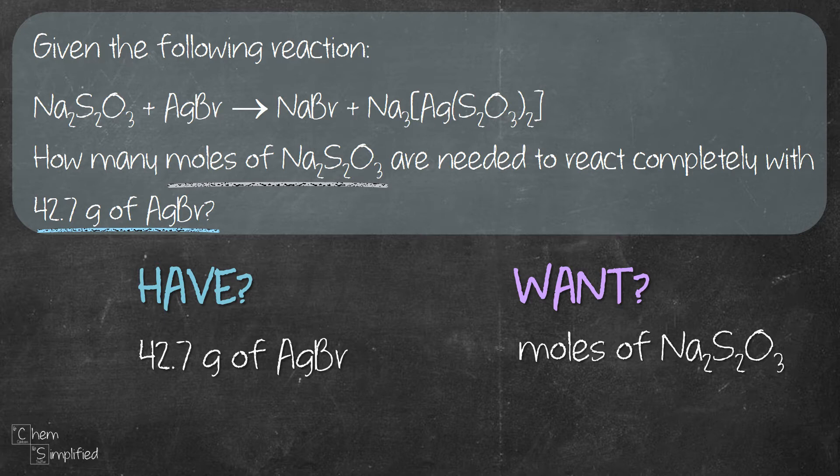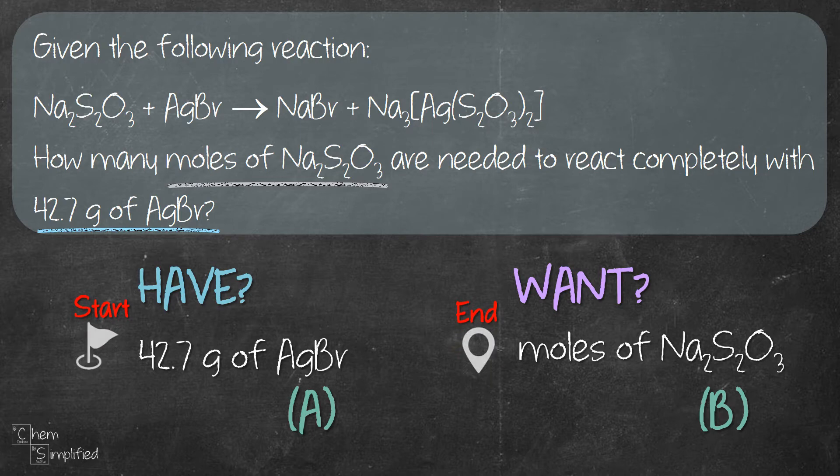Since we're dealing with two substances here which is AgBr and Na2S2O3, we'll call them A and B respectively. A is for what's given, B is for what we need to find. So our starting point is what we have and ending point is what the question wants.